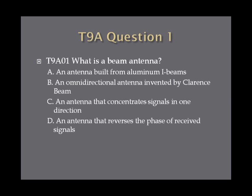Question 1: What is a beam antenna? A. An antenna built from aluminum I-beams. B. An omnidirectional antenna invented by Clarence Beam. C. An antenna that concentrates signals in one direction. Or D. An antenna that reverses the phase of received signals.